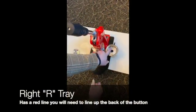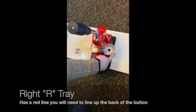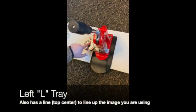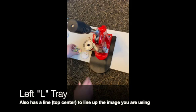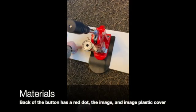In the right tray it has a red line you will need to line up the back of the button. The left tray also has a line at the top center and you'll need to line up your image using that.